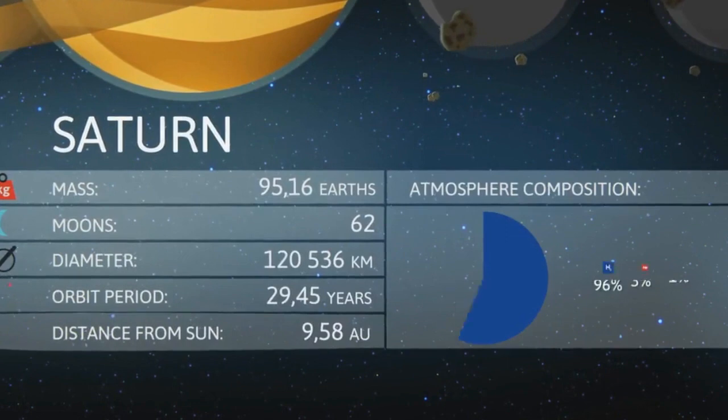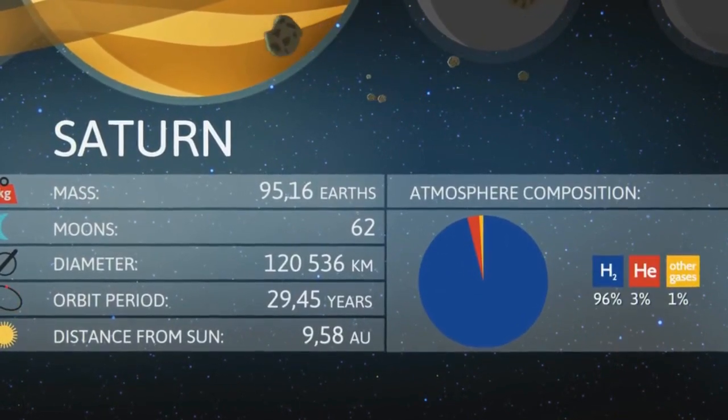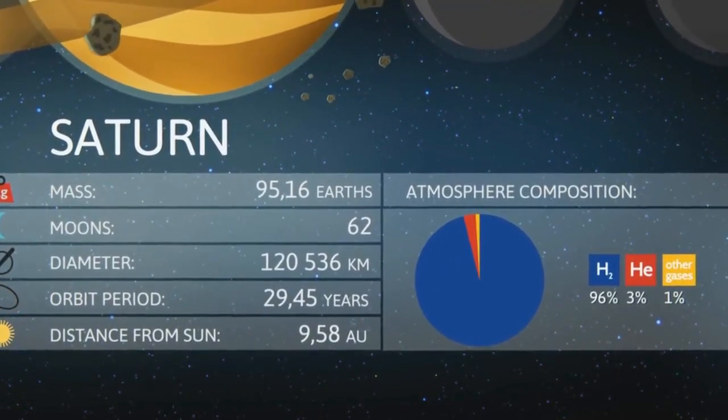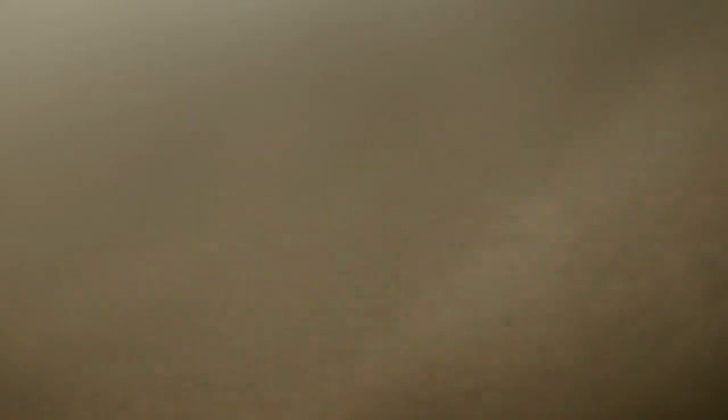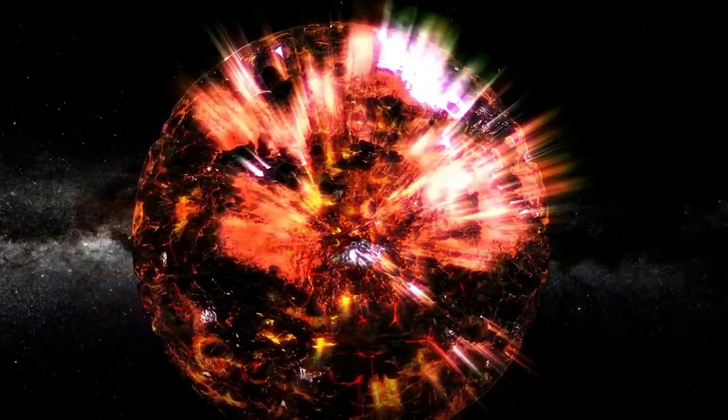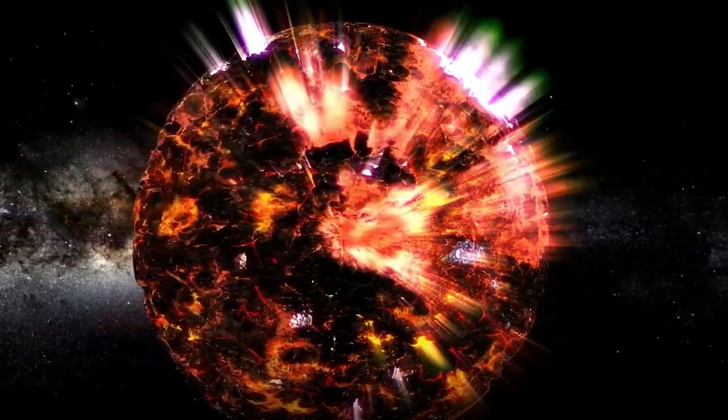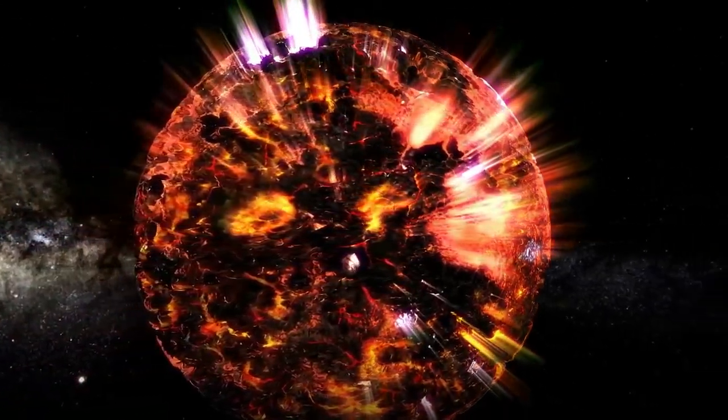Our own sun does this too, but Betelgeuse's SME was on another level. It ejected a staggering 400 billion times more material than our sun, equivalent to several times more mass than the moon. As this material cooled, it formed a cloud of dust that partially blocked our view of Betelgeuse, causing it to dim.